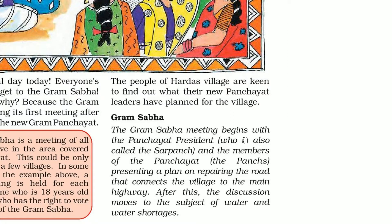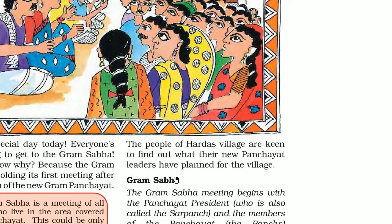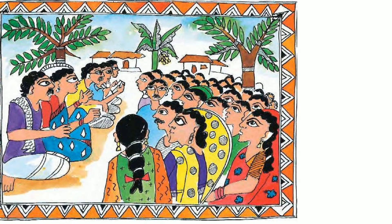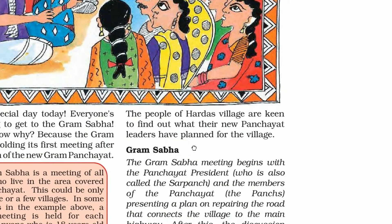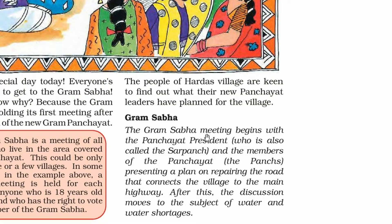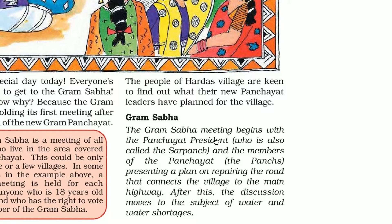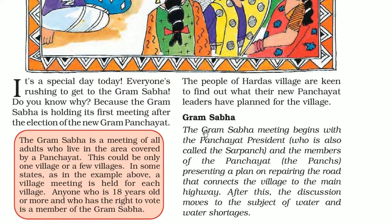The Gram Sabha meeting begins with the Panchayat president, who is also called the Sarpanch — the head among these 5 people. The members of the Panchayat are called Panch. They are presenting a plan on repairing the road that connects the village to the main highway. After this, the discussion moves to the subject of water and water shortages.